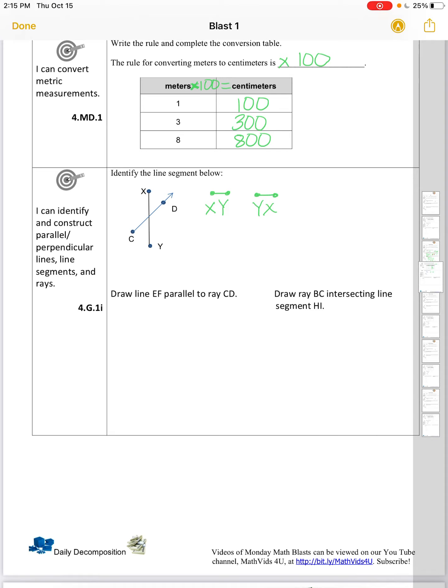Draw line E, F parallel to ray C, D. Now a line extends in both directions. So we're going to have arrows at both ends. So here I'm going to call this line E, F.